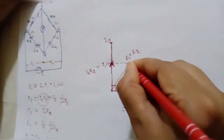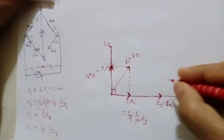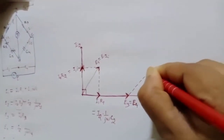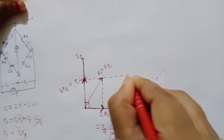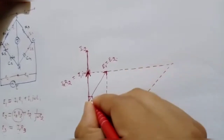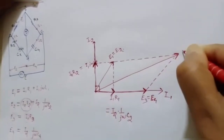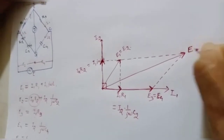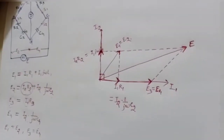Now we have E1, E2, E3, and E4. The total circuit voltage E is found by drawing parallel lines — it is the phasor sum of E1 and E3, or equivalently E2 and E4. This is the complete phasor diagram of Wein's Bridge.